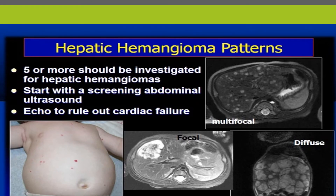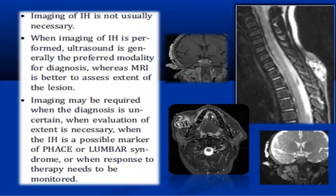For hepatic hemangioma: if there are five or more cutaneous hemangiomas, we should screen for hepatic hemangioma by abdominal ultrasound and also perform an echocardiogram to rule out cardiac involvement. Imaging of infantile hemangioma is not usually necessary, but when performed, ultrasound is the preferred modality for diagnosis, while MRI is better to assess the extent of the lesion. Imaging is required when the diagnosis is uncertain, when extent evaluation is needed, or when the hemangioma may be a marker of a syndrome, or when response to therapy needs monitoring.